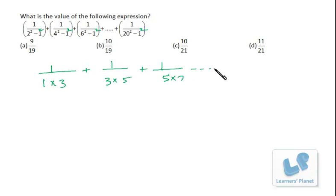Then 1 upon 6 minus 1, 6 plus 1, that is 5 into 7. Similarly, we will be going till 1 upon 20 minus 1, that is 19 into 21.